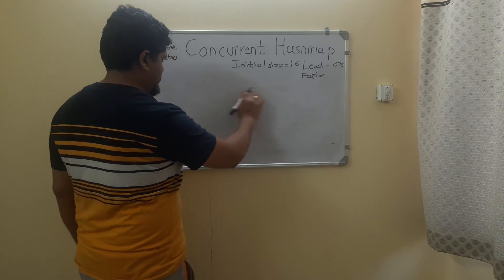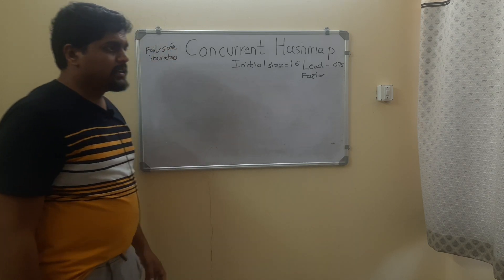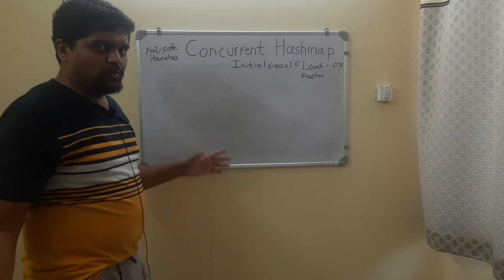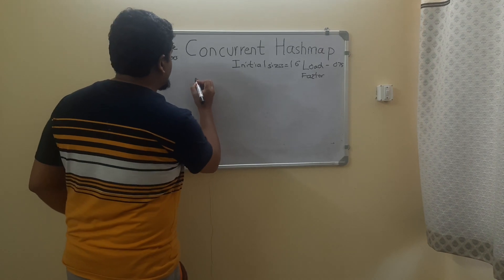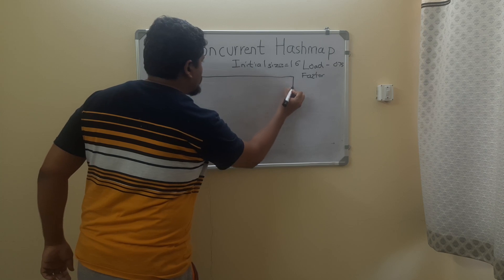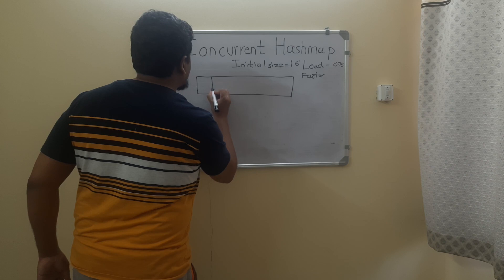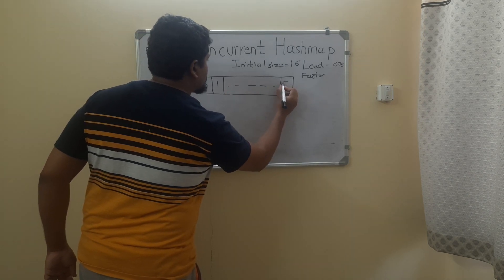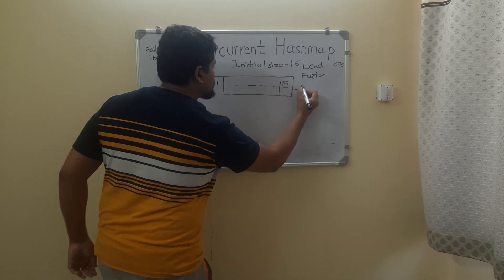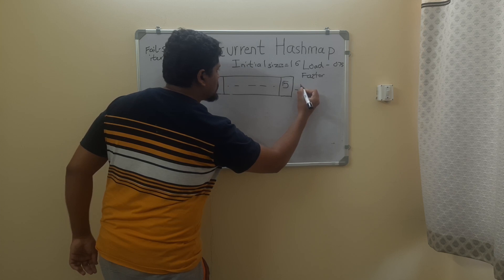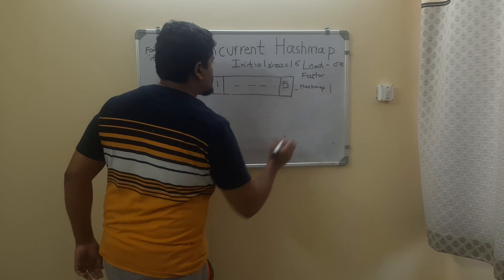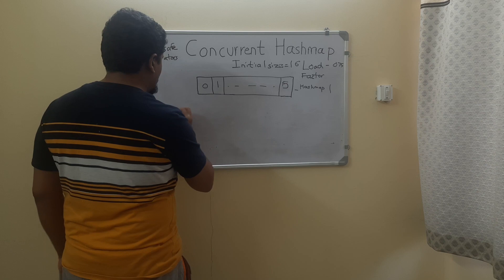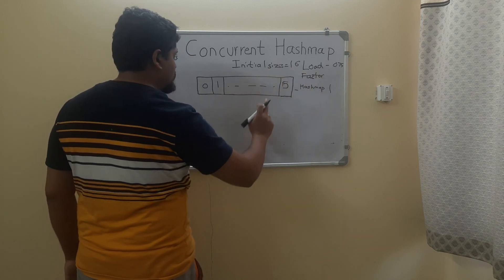The load factor is 0.75, meaning when 75% of the entire HashMap is filled it doubles itself in size. So to the existing 16 nodes, a new list of 16 nodes is appended. Let's say HashMap 1 is our first list of 16 nodes — when 12 of its nodes are filled (75%), it will resize itself using the load factor of 0.75.